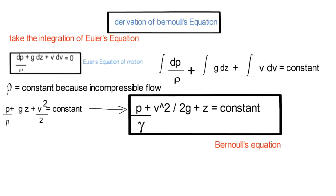Here we have three terms of Bernoulli's equation. The first term is called the static pressure head, the second one is the kinetic head or velocity head — as you can see, because we have velocity in this term — and the third one is the hydrostatic pressure head, because it depends on the height of the fluid from the specified reference we chose.